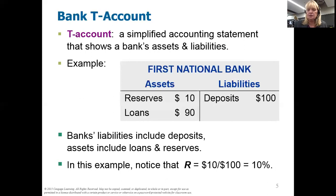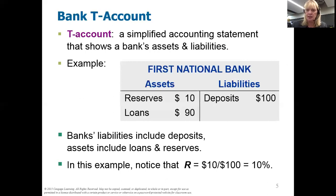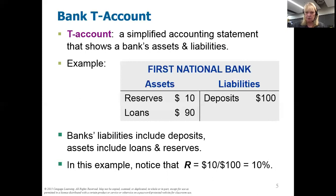In this example, notice that R, the reserve ratio, equals 10%. The Federal Reserve has said you must keep reserves of 10% of your total deposits. So the bank has $100 in total deposits — 10% of that must be kept in reserve, so $10 is kept in reserve and the rest is out on loan. Referring back to the equation total reserves equals required reserves plus excess reserves, we can see that this bank doesn't have any excess reserves — all they have are the required reserves.